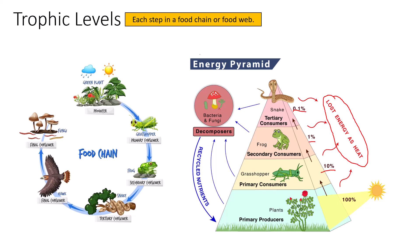That is why the shape of this pyramid is in fact a pyramid — the amount of energy continually decreases at each level. This is also why food chains can't progress indefinitely. There has to be a limit to their length because eventually there just isn't enough energy to transfer to the next level. It doesn't make any ecological sense for an organism to be feeding at a fifth, sixth, seventh, or eighth consumer level — there just isn't enough energy to transfer.